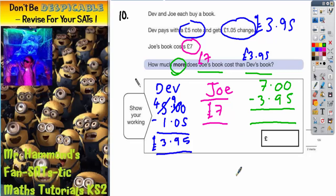If I count up from £3.95 to £4, that's five pence. And then if I count up from £4 to £7, that's £3. So it looks like it's going to be £3.05.